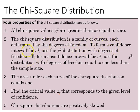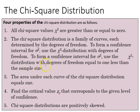To form a confidence interval for variance, we use the chi-square distribution with degrees of freedom equal to one less than the sample size, much like the t-distribution.